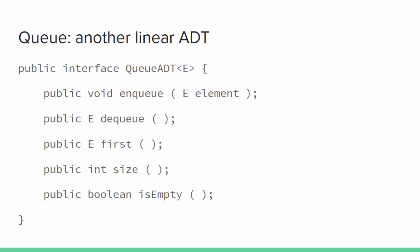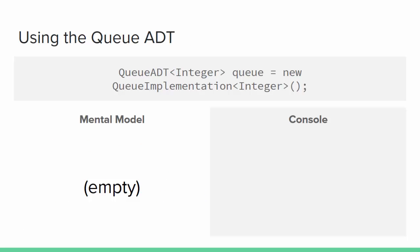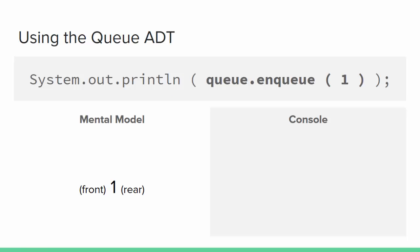We don't have documentation comments here, but users and programmers would need good documentation to be on the same page. As with the stack example, a program using a queue would create a variable of the interface type and assign an object that implements it. From then on we use the ADT methods without worrying about the particular implementation — if we wanted a different implementation later, modifying the assignment statement is all that would be necessary. We begin with an empty queue: size is 0. We add element 1 using enqueue at the rear, making it also the first element that would be returned. Size is now 1 and isEmpty returns false.